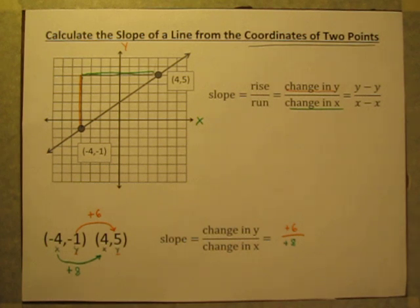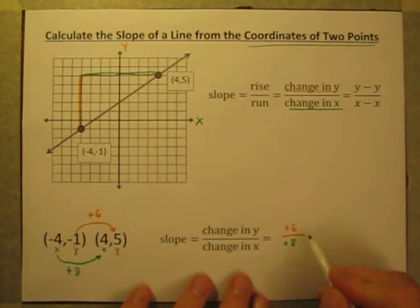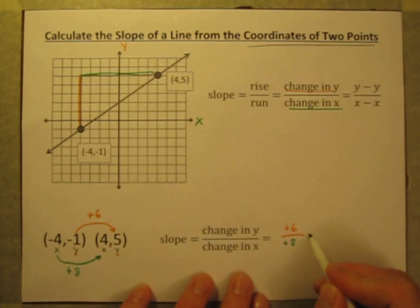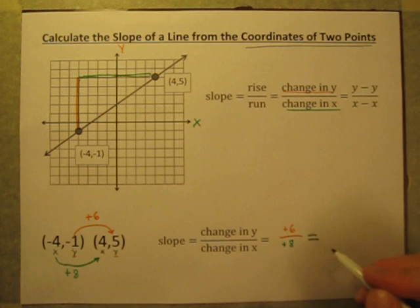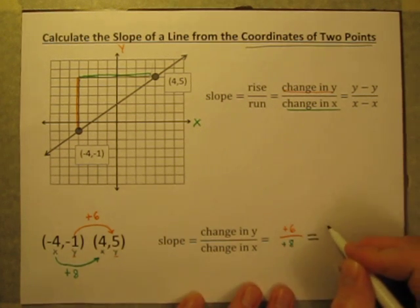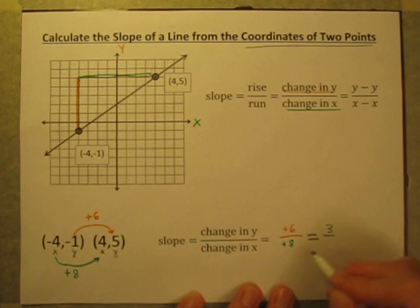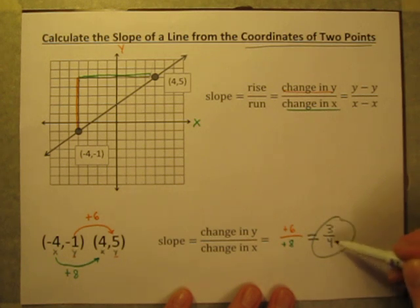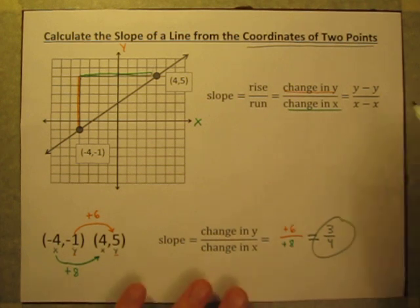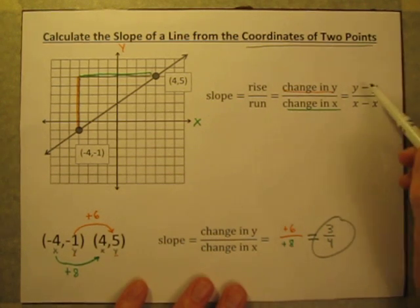So once I know that, my slope is 6 over 8. But remember, you should always reduce those slopes to lowest terms. A 2 can go into both of those — 2 goes into 6 three times, and 2 goes into 8 four times. So my slope is 3 fourths. That means up 3, right 4 — that is the slope of that line.